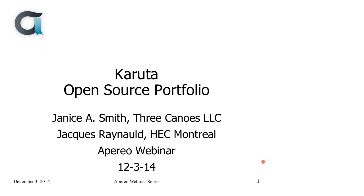We have software projects being actively developed and maintained. Many of them are in production at hundreds or indeed thousands of institutions worldwide. You can see those at our website. Today I would like to introduce Karuta. Karuta is a next generation system to support portfolio activity. It's a project with international collaboration at its core, being developed by a partnership of HSM Montreal, Grenoble and Kyoto University with support from a commercial entity in the United States, Three Canoes.